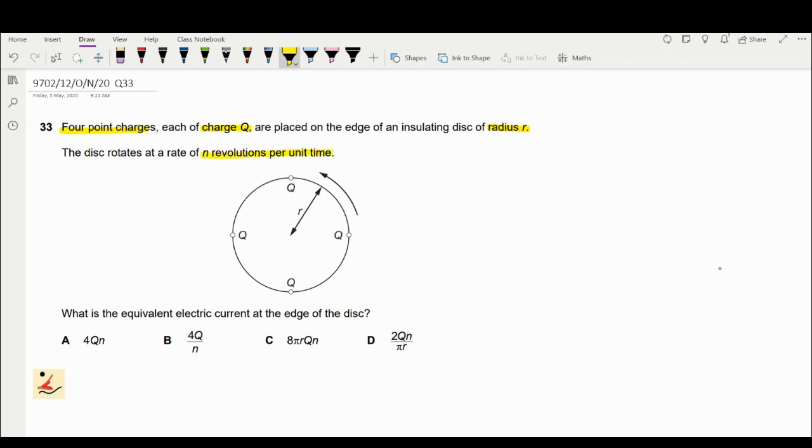So what is the equivalent electric current at the edge of the disk? Looking at this question, it's given the radius r and there's a charge Q here.